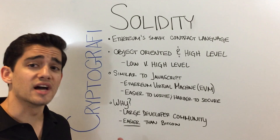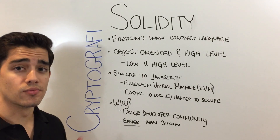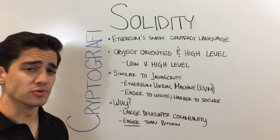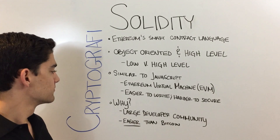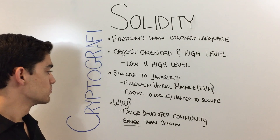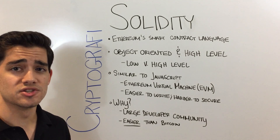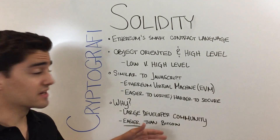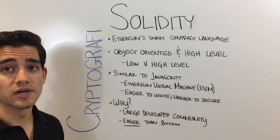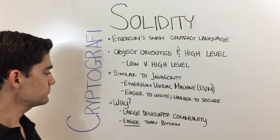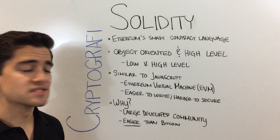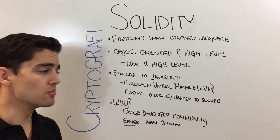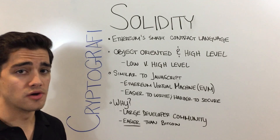The Ethereum Virtual Machine is completely isolated, which means it's easier to write and test things, but it's a little harder to secure and makes it more vulnerable because you can't really throw it into production. This is important because Solidity leverages the larger developer community that JavaScript has cultivated over decades — meaning if you understand JavaScript, you can start writing smart contracts right away. More importantly, Solidity makes it easier to program smart contracts than in Bitcoin, which uses lower-level, more technical abstract languages that fewer people understand.